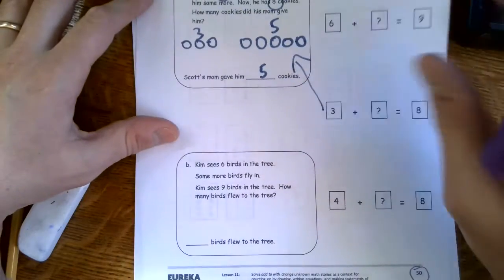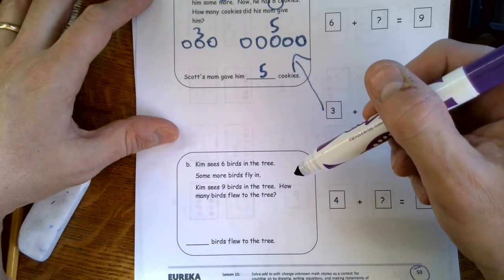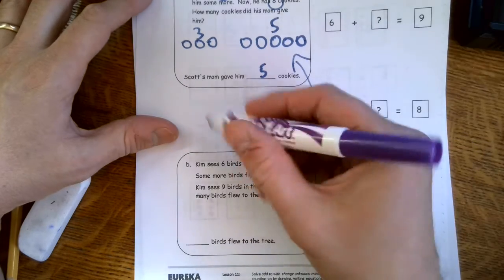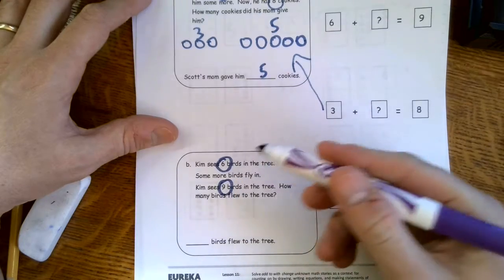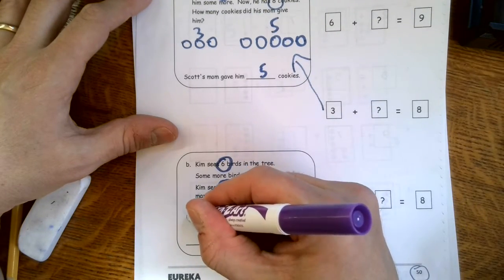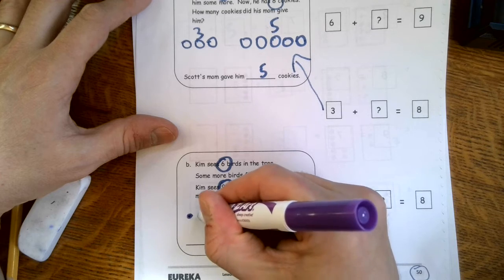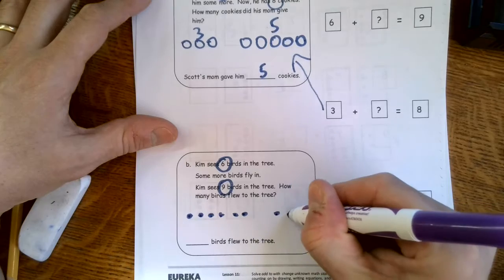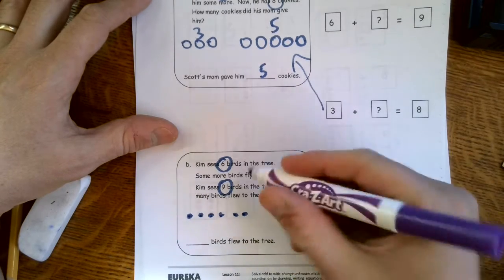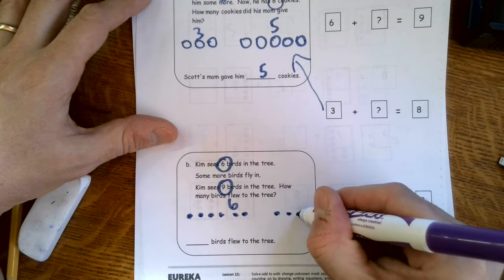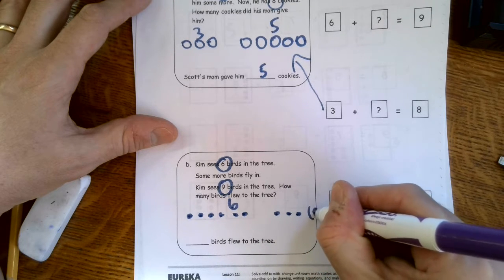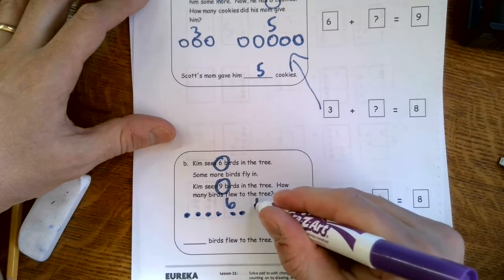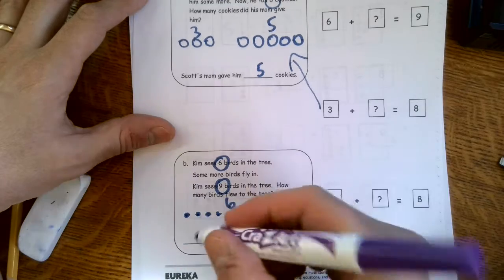Kim sees six birds in the tree. Some more birds fly in. Kim sees nine birds in the tree. How many birds flew to the tree? I'm going to do a little bit of circling here so I don't have to look all over. Six birds, I'll just do dots again. One, two, three, four, five, six, and then seven, eight, nine showed up. Oh my goodness. So there's the six and then seven, eight, nine got us to nine. So that was a nine, but it's actually, we have three. I just put the nine there to keep my notes. So six and three make nine.